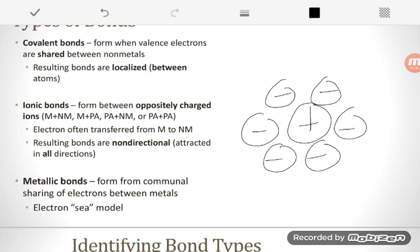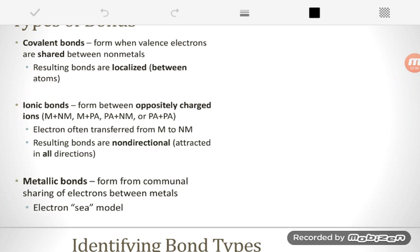So covalent bonds are very localized. The electrons are between two atoms that are sharing them. Ionic bonds are not that specific. They're non-directional, attracted in all directions. Now those are the two main types of bonds we tend to worry about, but we can also look at our metallic bonds.